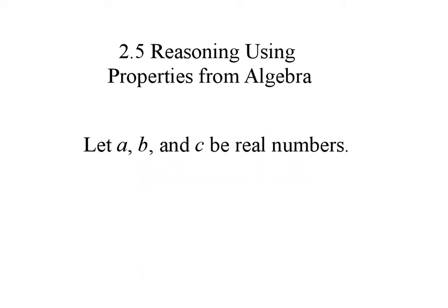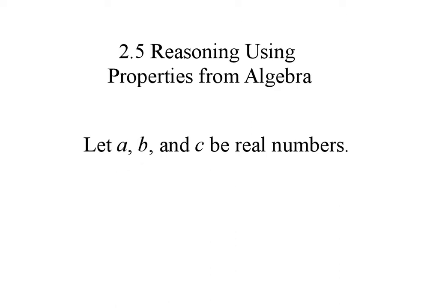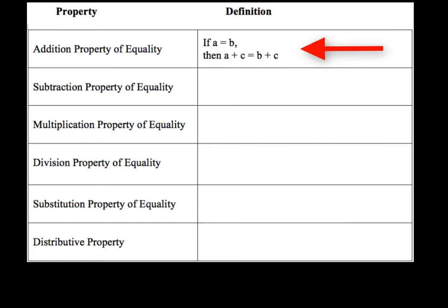When we take a look at reasoning using properties in algebra, the letters A, B, and C, when we use these in all of our properties, they are going to represent real numbers. So let's take a look at our first property. The first property is going to be the addition property of equality, and that just simply states if A equals B, then A plus C equals B plus C.